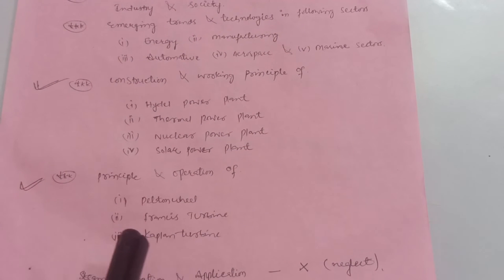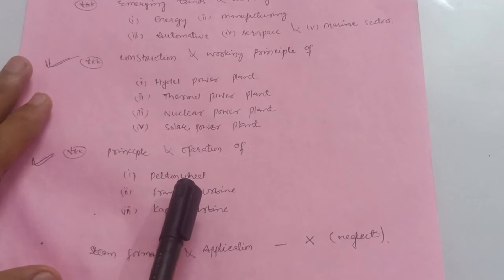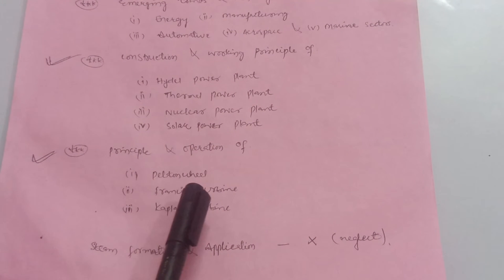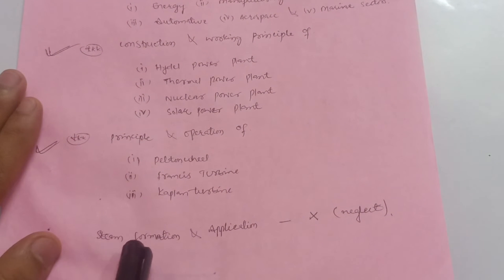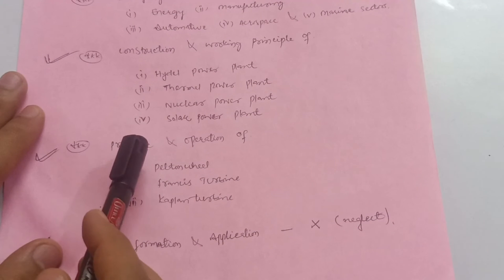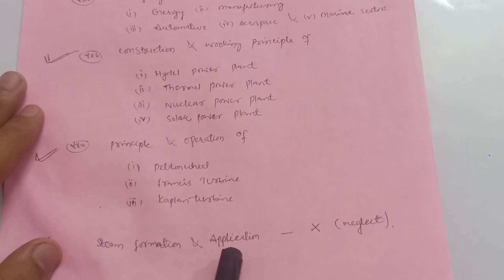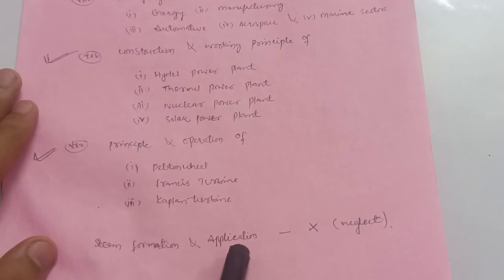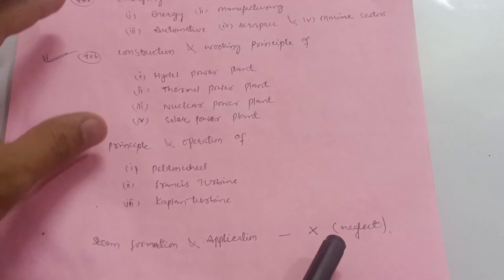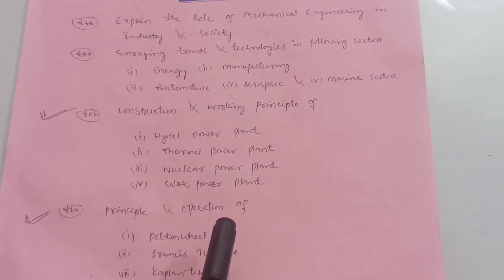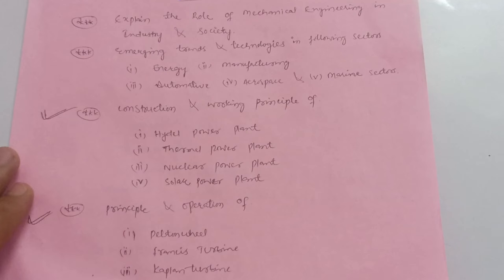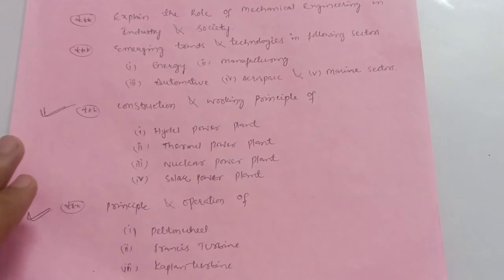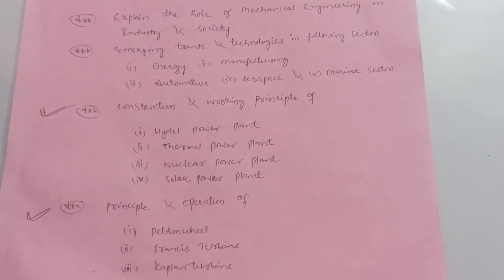Next, the principle and operation of a Pelton wheel turbine, Francis turbine, and Kaplan turbine — these are the most important ones. Just try to draw neat sketches, nothing more than that. There are four chapters in this module; three chapters are these which I mentioned. The next one is steam formation and application, which is a bit typical — you can easily neglect it.